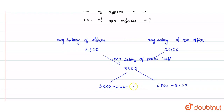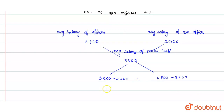This gives us the ratio of the number of officers to the number of non-officers. Solving 6800 minus 3200 gives 3600, and 3200 minus 2000 gives 1200.